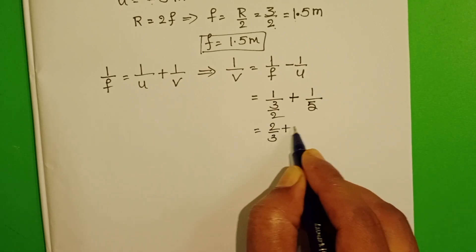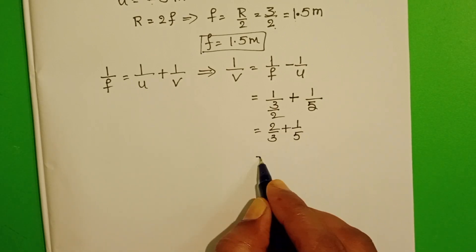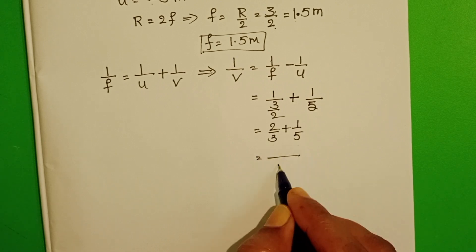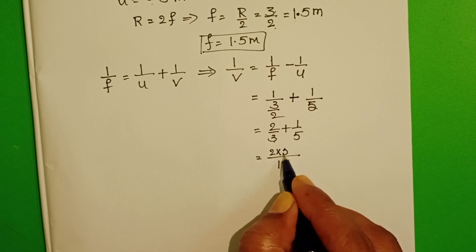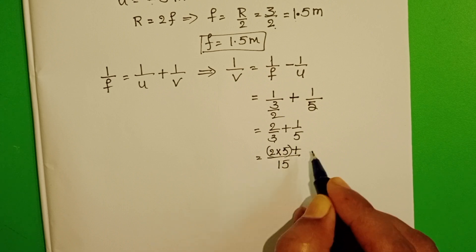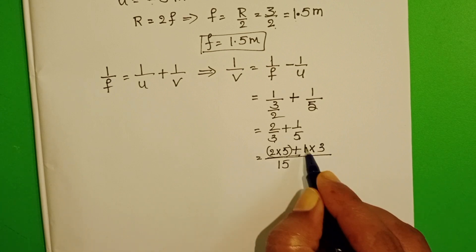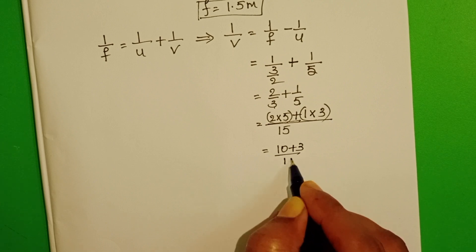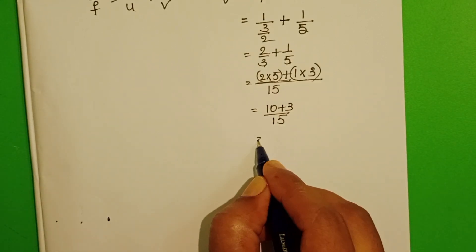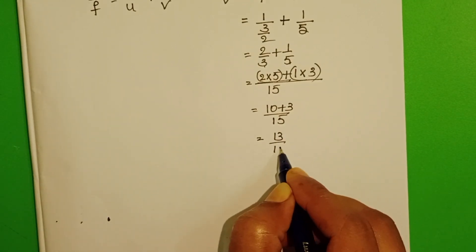2 by 3 plus 1 by 5. LCM is 15. 2 times 5 is 10, 1 times 3 is 3. 10 plus 3 by 15. That equals 13 by 15.